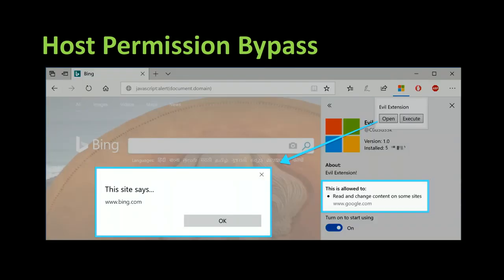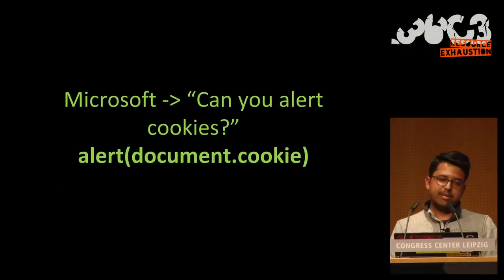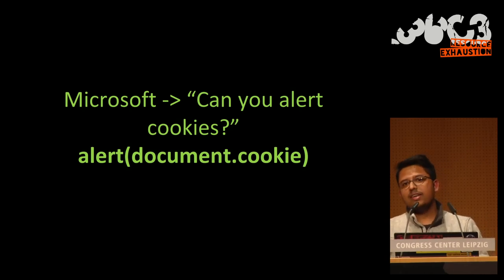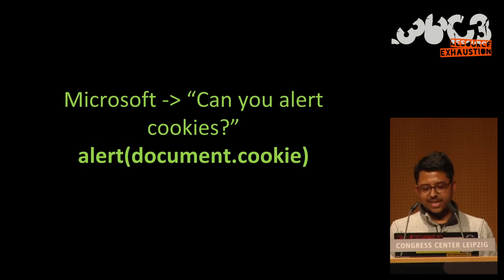This extension was supposed to only run on google.com, but now we're on bing.com and clicking the Open button gives us JavaScript code execution on bing.com. This is a total violation of privacy because the user believes the extension shouldn't run on any domain except google.com. This was reported to Microsoft again, and they asked: can you also steal user cookies? I said, why not — instead of document.domain, you can use document.cookie to pop up user cookies.